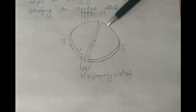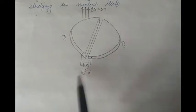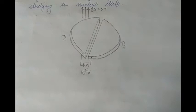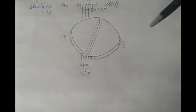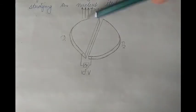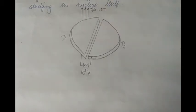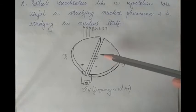Coming back to the cyclotron: it is made up of two hollow horizontal metallic segments in the shape of a D, so they are simply called D's — D1 and D2. Across the two D's we have an alternating potential difference of about 10 to the power 5 volts. We also have a perpendicular magnetic field of the order of 1.5 Tesla, perpendicular to the plane of the two D's.